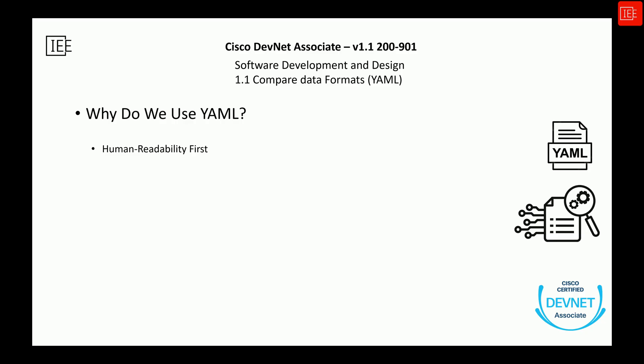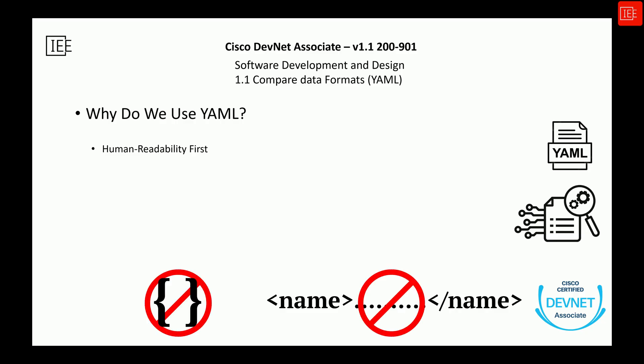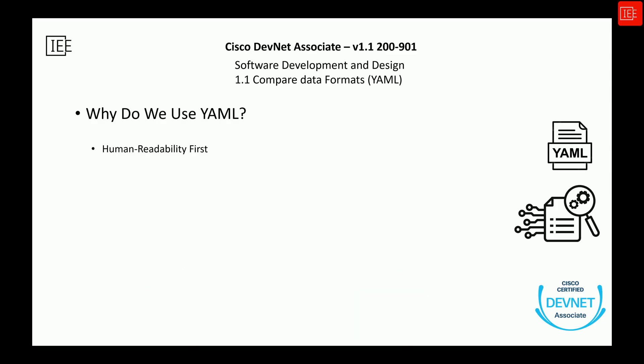One of the biggest reasons we use YAML is because it's simply easier to read and write than other formats like JSON or XML. No curly braces like JSON, and no opening and closing tags like XML — it looks more like a checklist or a set of organized notes. You can glance at a YAML file and immediately get an idea of what it's doing without needing to mentally decode it. When you are managing dozens or hundreds of devices, being able to quickly read a YAML file saves you a lot of mental energy.